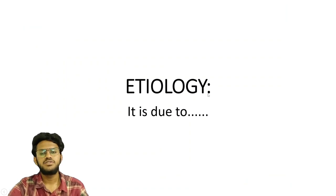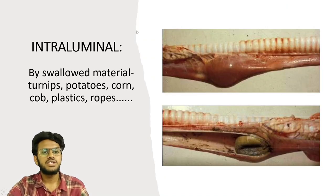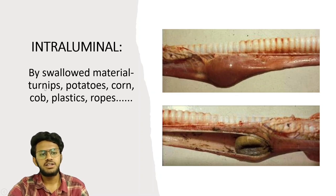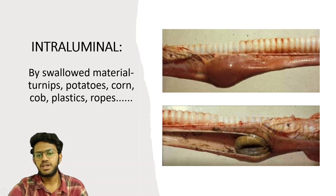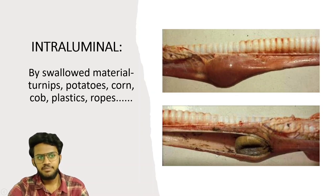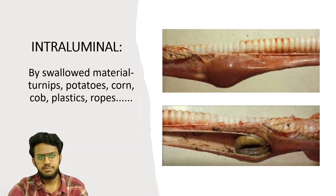Esophageal obstruction is due to two factors. The first is intraluminal, meaning obstruction caused by swallowing material such as turnips, potatoes, corn, cob, plastics, and ropes. You are looking at an image showing the presence of some material like turnip, potato, or corn causing obstruction in the esophagus.